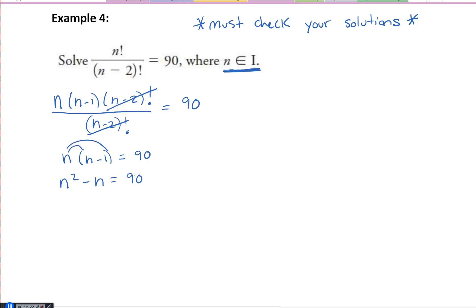But I can't solve until I've got the 90 on the other side. So I'm going to subtract 90 from both sides. I've got n squared minus n minus 90 is equal to zero.